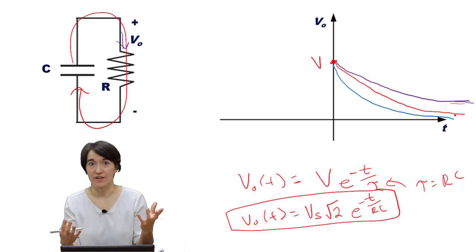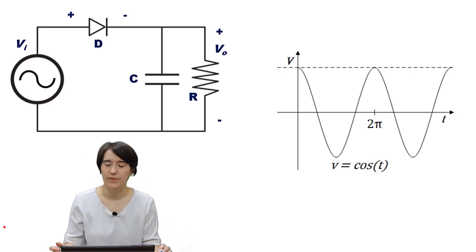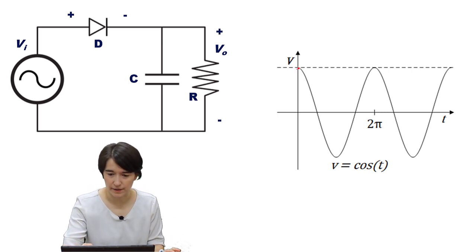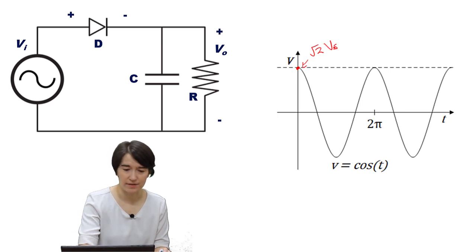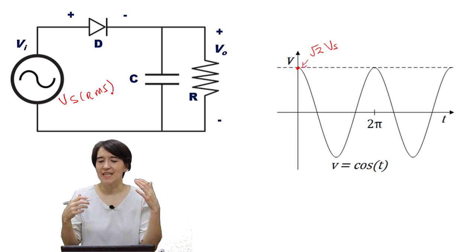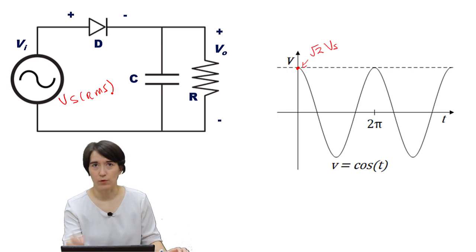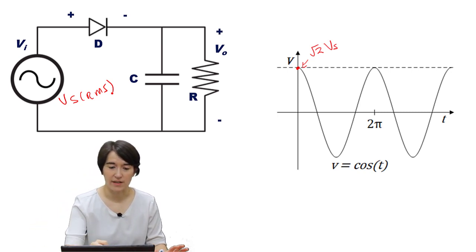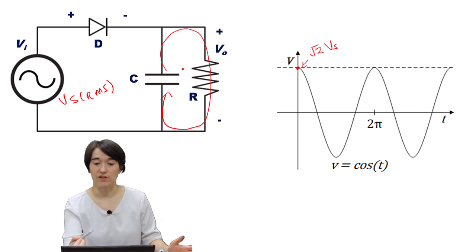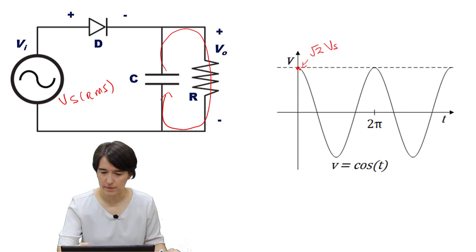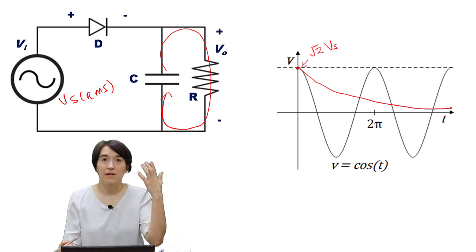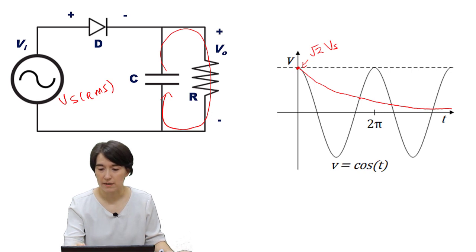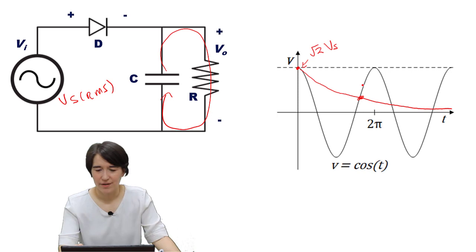Let's look back at this waveform. After we hit this peak value here—and again remember that value is going to be the root 2 times the RMS value of the input, so this is V_s, and remember that RMS—then instead of following the input voltage down to the negative, we're just going to let the RC circuit take the lead and control the output voltage. So it's going to look something like this, some sort of exponential decay. I'm going to draw it all the way out here.